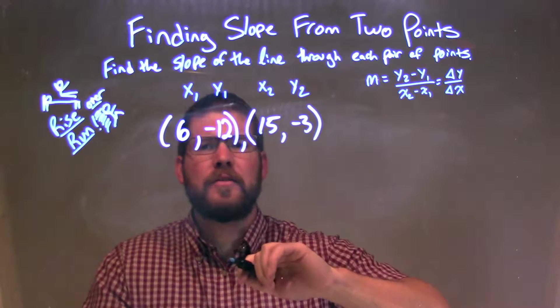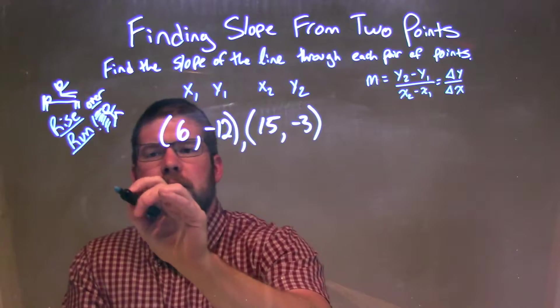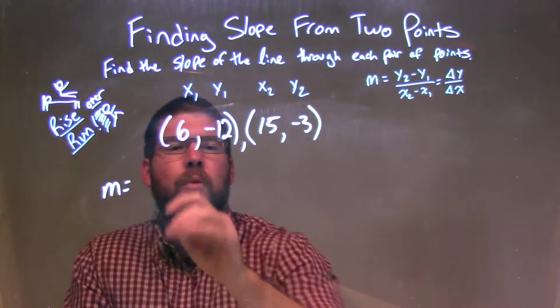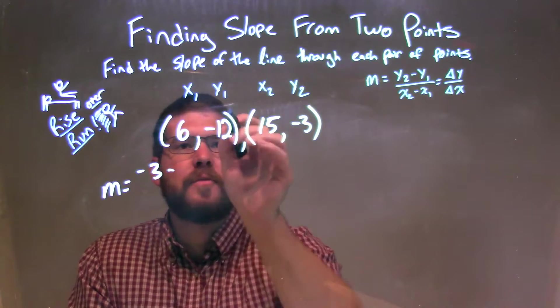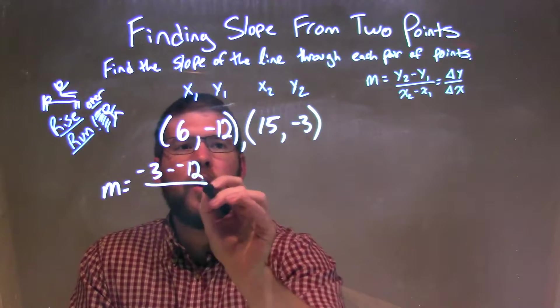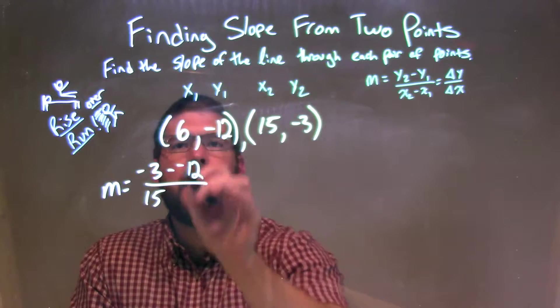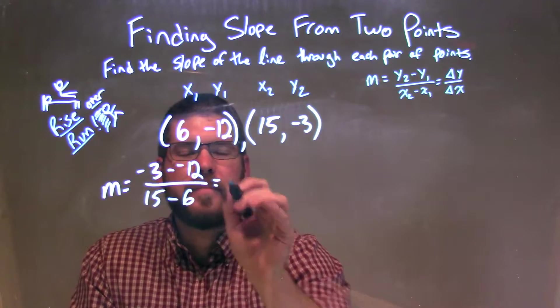So I need to apply the slope formula. My slope formula, m equals y2 minus y1 over x2 minus x1. That's negative 3 minus negative 12 over x2, 15, minus x1, 6.